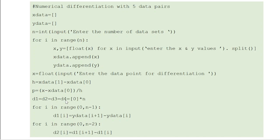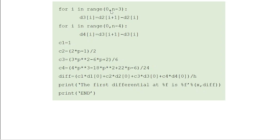Populate the difference arrays: d1 is computed by taking differences of successive y values using range(0, n−1); d2 uses range(0, n−2); d3 uses range(0, n−3); and d4 uses range(0, n−4). Each order takes the difference of the previous order's elements. All difference terms are now computed.